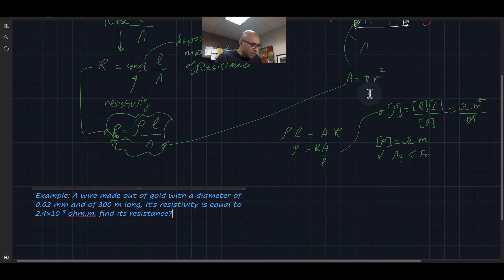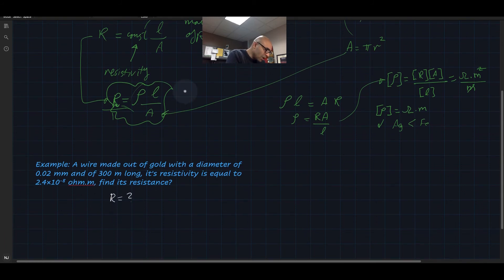So let's have this example here. In this example, we have a wire that is made out of gold with a diameter 0.02 millimeters. So it is very, very thin. It's even thinner than the human hair. And its length is 300 meters. Its resistivity is given and is equal to 2.4 times 10 to minus 8 ohm meter. We need to find its resistance. So R is the unknown here.